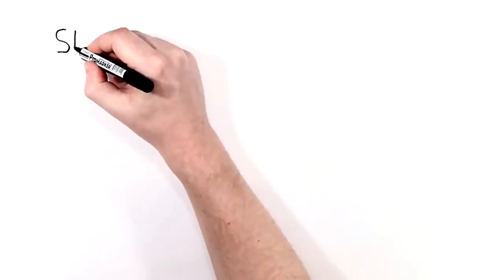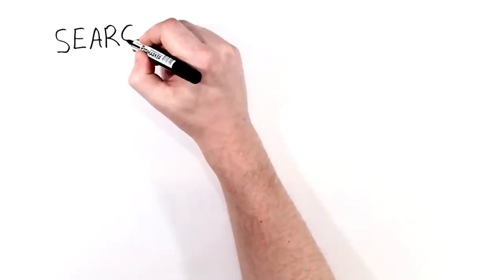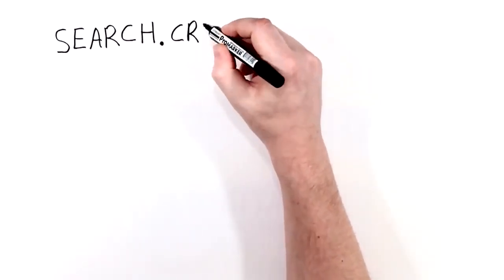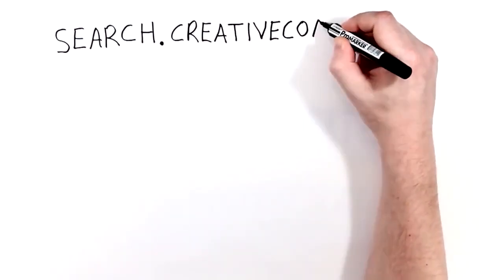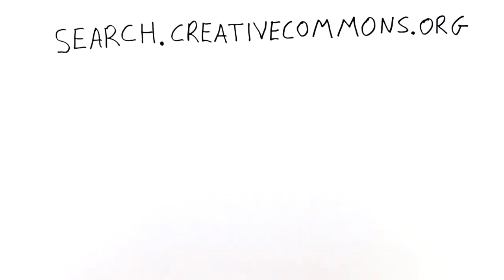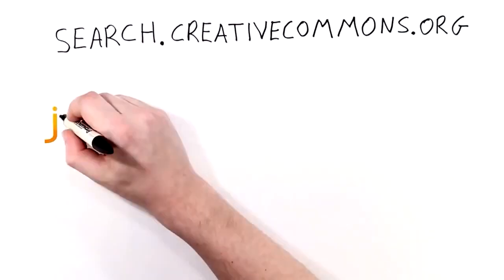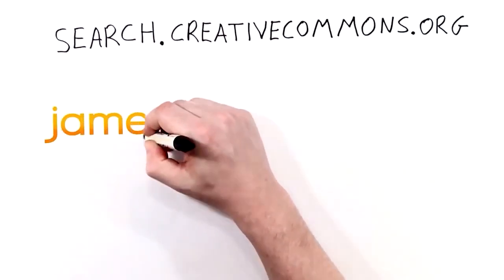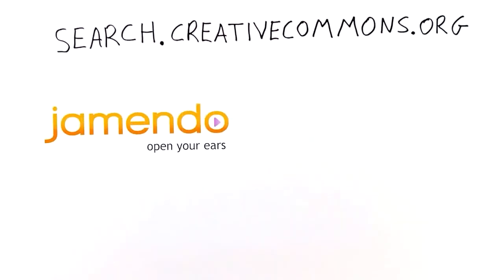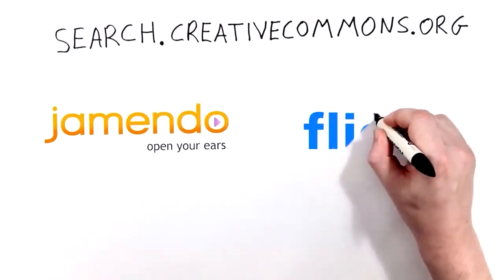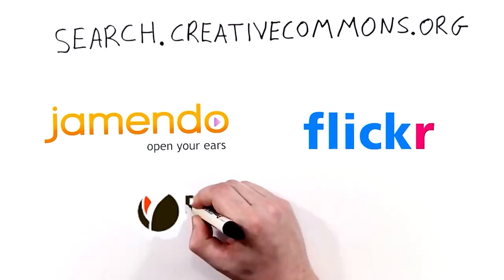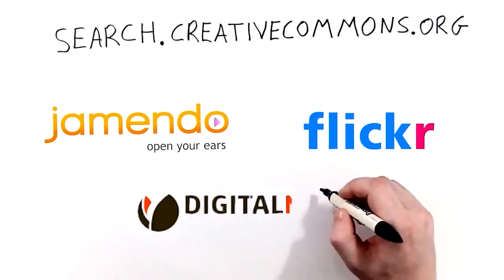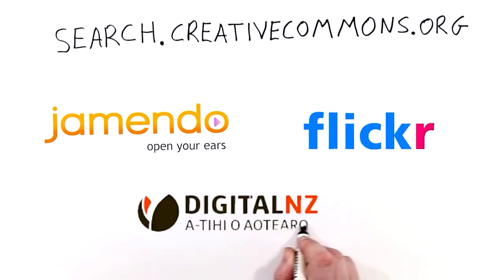There are some good ways to find other people's Creative Commons licensed work online. You can use a search filter by going to the Creative Commons website. Or why not try the Jamendo website for music, Flickr for images, or DigitalNZ for New Zealand content.